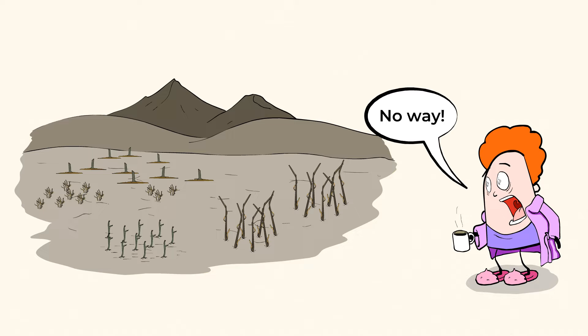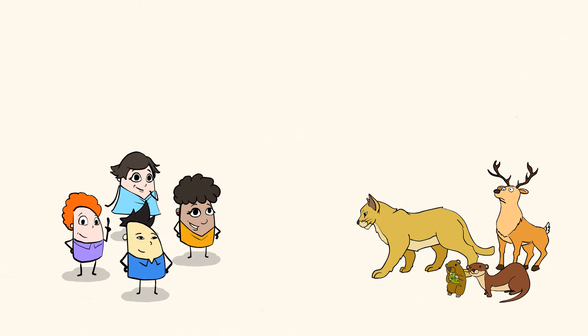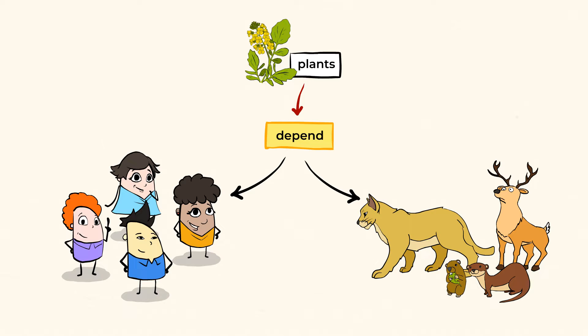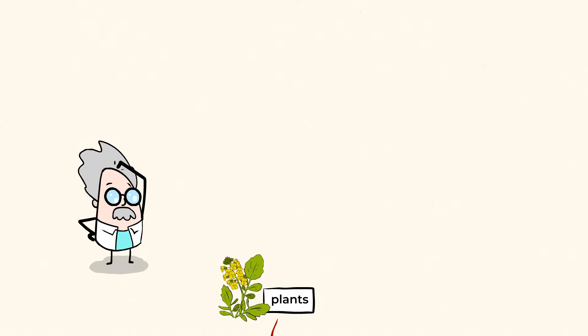It would be a very gray and dark world. All animals and humans depend on plants for life in some way, even if they never eat a plant. But why are plants so important?